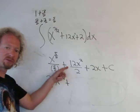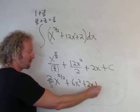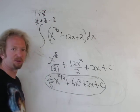Plus 6, 12 over 2 is 6. So 6x squared plus 2x, and then you have your plus C. And that's it. Hope that made sense.